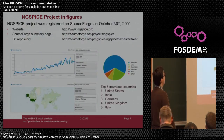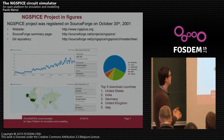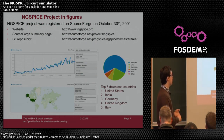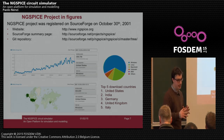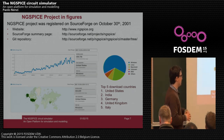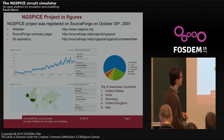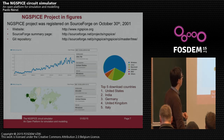NGSpice was registered on SourceForge in 2001 and now counts roughly 300k downloads spread across five countries. It's quite a big community — less than Qucs, but still big.